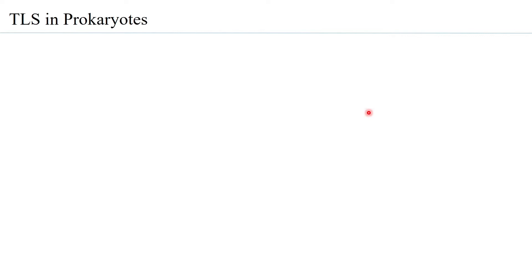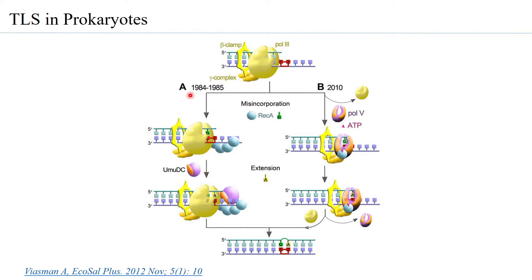For TLS in prokaryotes, what was earlier thought was that when DNA polymerase 3, the main polymerizing enzyme with the beta clamp, reaches an adduct — here again a thymidin dimer is shown — most TLS studies have been conducted because of thymidin dimers. UV irradiation leads to formation of many thymidin dimers, and understanding their repair has led to identifying different repair mechanisms including translesion synthesis. REC A was found to be instrumental in bypassing these lesions.